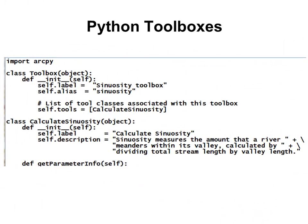The next week, we'll work with something fairly new called Python Toolboxes. A Python Toolbox is basically a text file where everything is written in Python. Here we have a tool that will calculate the sinuosity of streams.